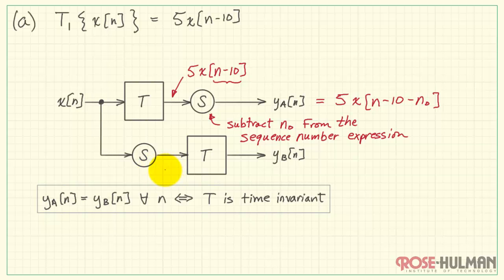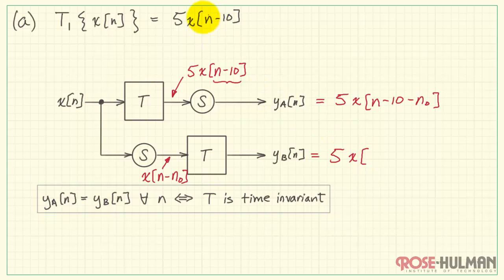Next, we take X, pass it through the shift operation first. This is our pre-shifted case, giving us X of n minus n0. The system operates as 5 times the delayed version of whatever is coming in on the input. I will write n minus n0, and then subtract 10.